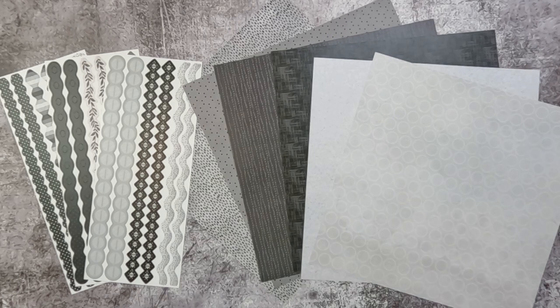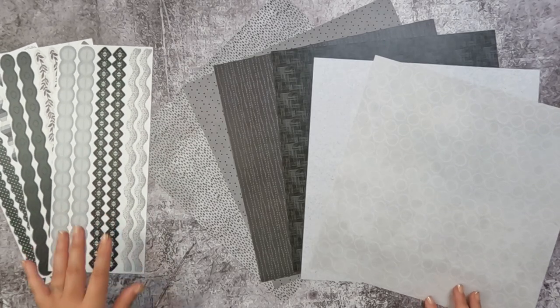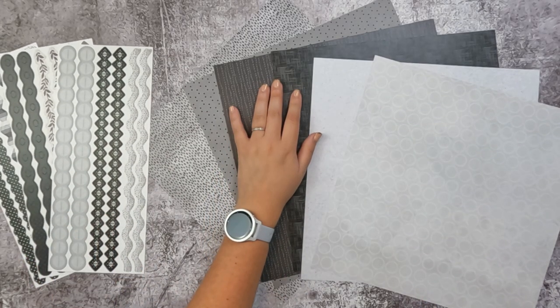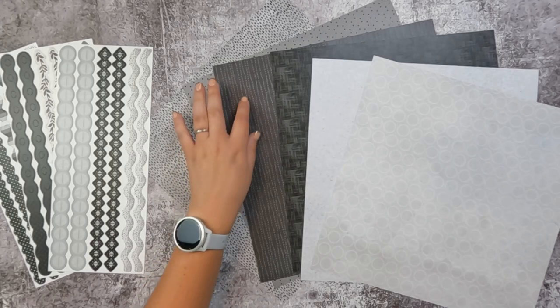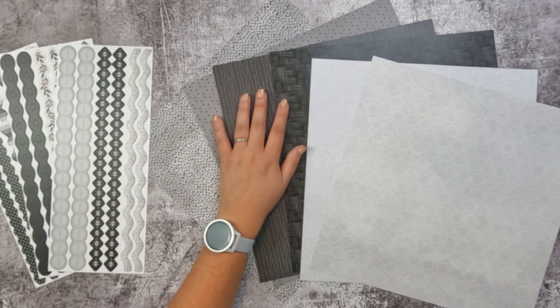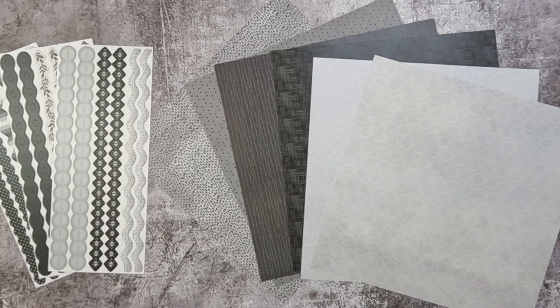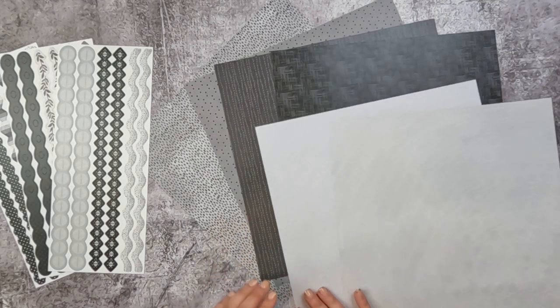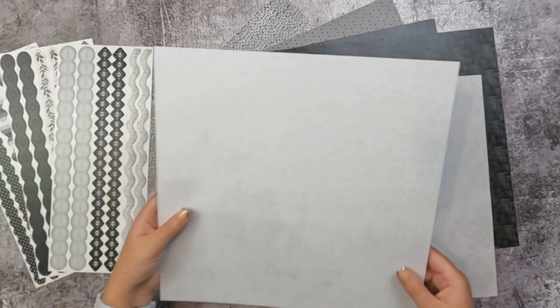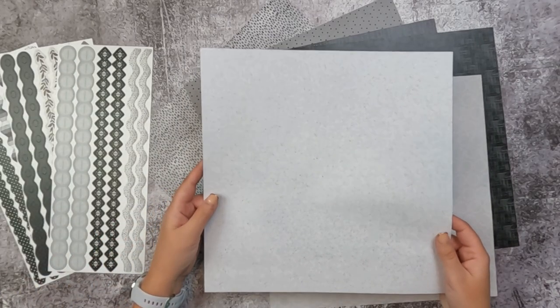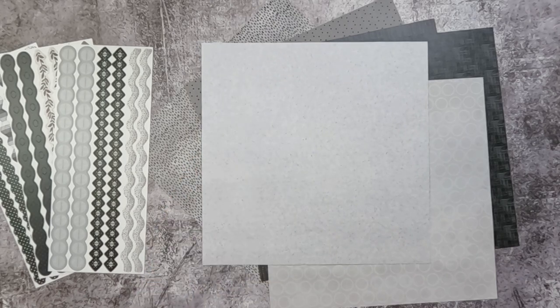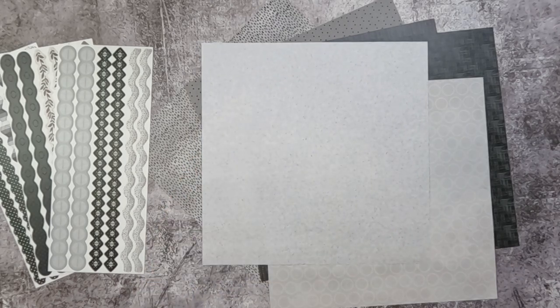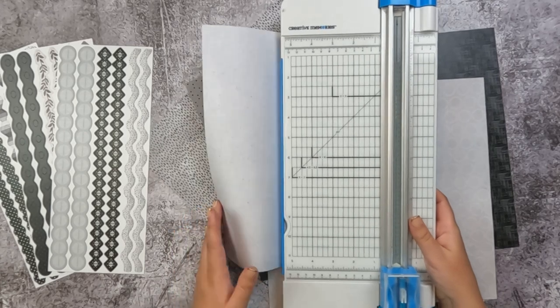So the first thing I need to do is choose a sheet as my base. I think I really want to go dark. I'm not sure if I want to use this black crosshatch or maybe this sort of triangular stripe. Actually, I'm going to come back to that. I'm going to create a really fun border first. So I'm going to choose a really light sheet. I think I'm going to go with this sort of concrete look. I need to cut this into a 5 by 12 sheet, so I'm going to pull out my 12-inch trimmer and make a 5-inch cut.